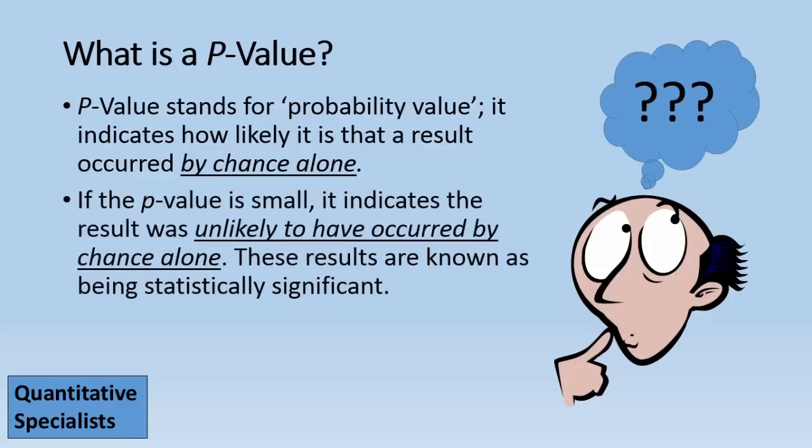If the p-value is small, it indicates the result was unlikely to have occurred by chance alone. These results are known as being statistically significant.